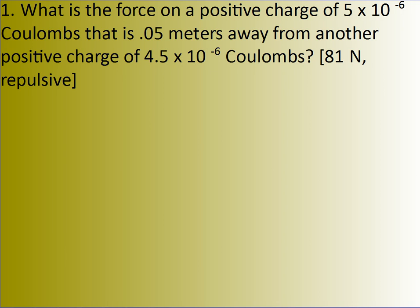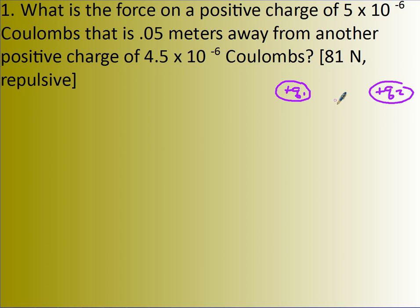Let's look at this problem. What is the force on a positive charge of 5 times 10 to the negative 6 Coulombs that is 0.05 meters away from another positive charge? First, let's draw the charges. We have positive charge 1, positive charge 2, and they're 0.05 meters away — so this is D away.